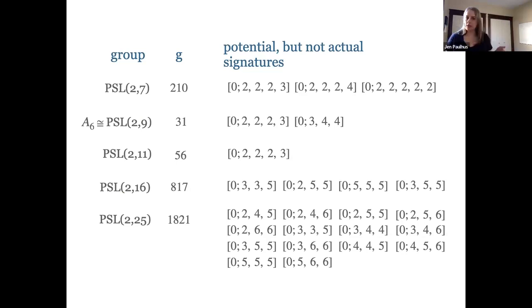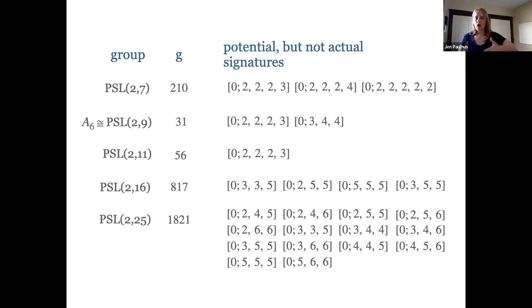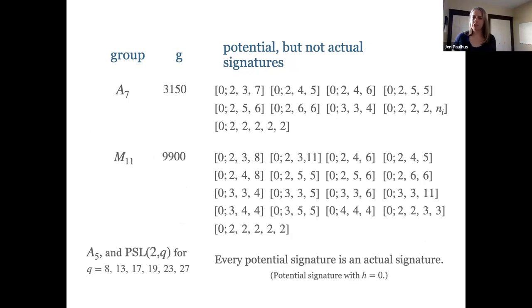For the PSL2(q) groups in the first table, G is the largest genus where there's a failure, and on the right are the potential but not actual signatures. You can see there are a few, but not many — these groups act in all but maybe three or five cases even among infinitely many potential signatures of quotient genus zero. Here are two more groups to round out the data up to order 10,000: A7 and one of the larger groups. It turns out that A5 and PSL2(q) for some primes and cubes of primes had every single potential signature be an actual signature when the quotient genus was zero.